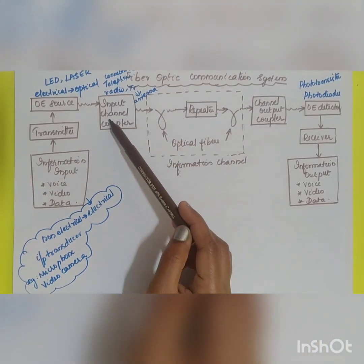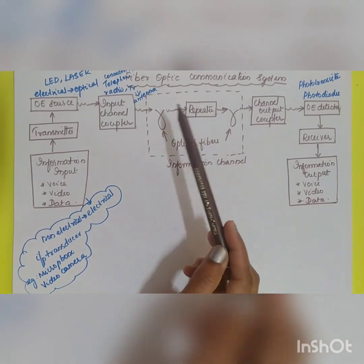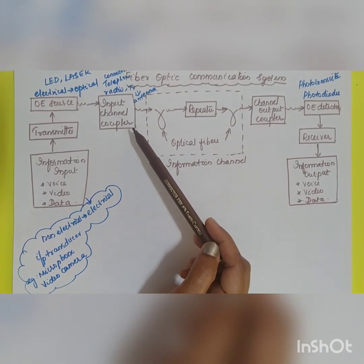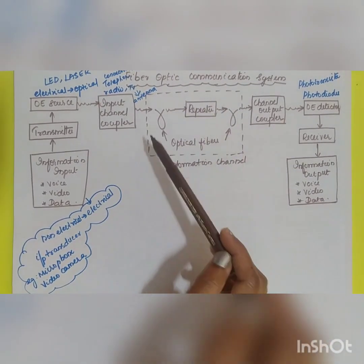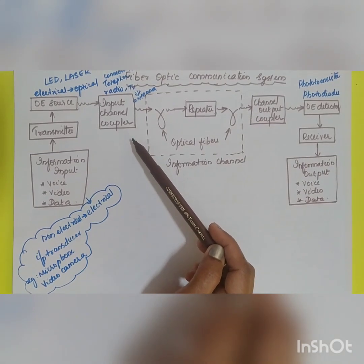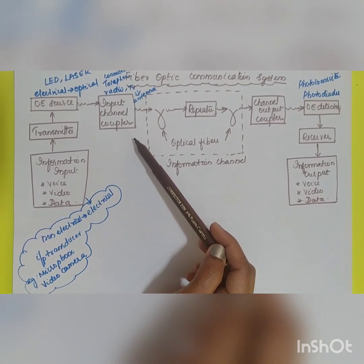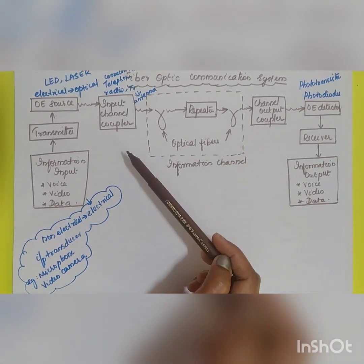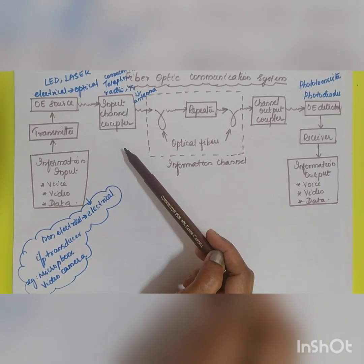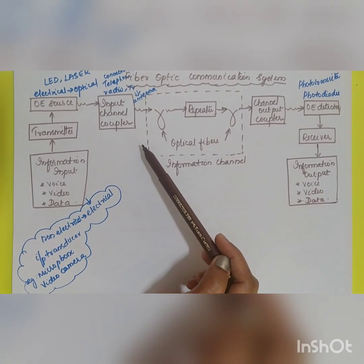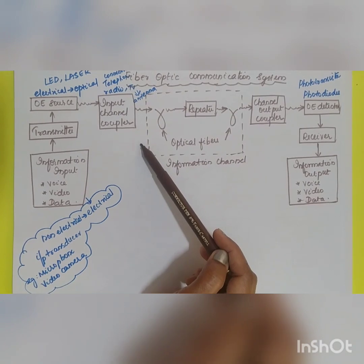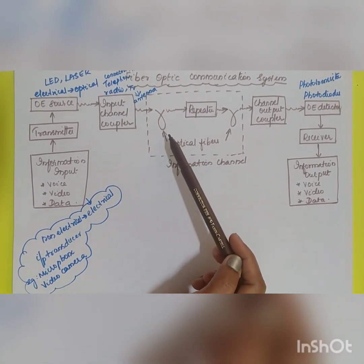The information channel is the part between the transmitter and the receiver. In fiber optic systems, the optical signal travels through a single fiber or a bundle of fibers. The optical fiber is a strand of ultra-pure glass designed to transmit optical signals from the optoelectronic source to the optoelectronic detector. There are two regions: the core, which is a solid cylindrical region with a diameter of 8 to 100 micrometers, and the cladding, which has a diameter of 125 micrometers. The refractive index of the core is greater than that of the cladding.